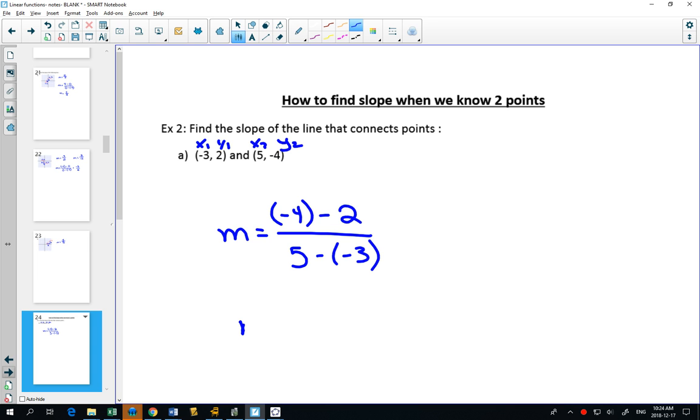So simplifying that, negative 4 minus 2, negative 6, 5 minus the negative 3, 5 plus 3 will be 8. This simplifies to negative 3 over 4. So part B, I would like you to find that slope and show me once you're done.